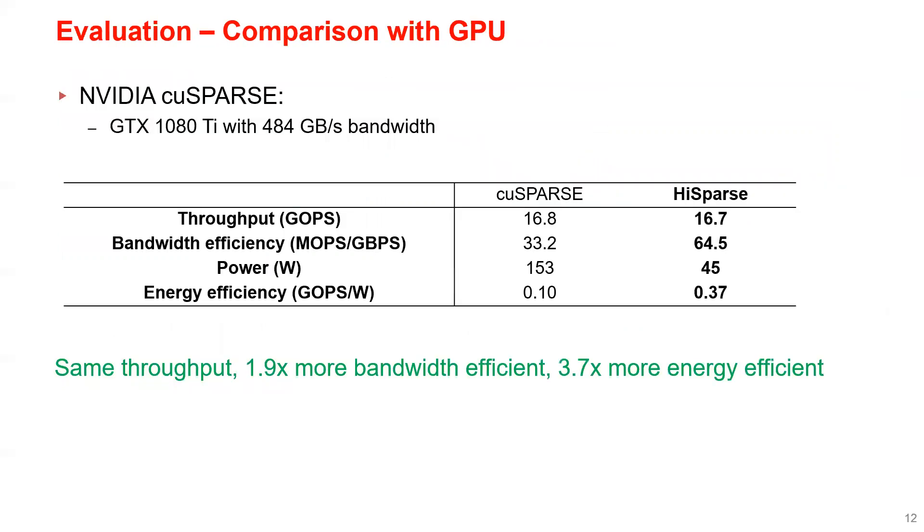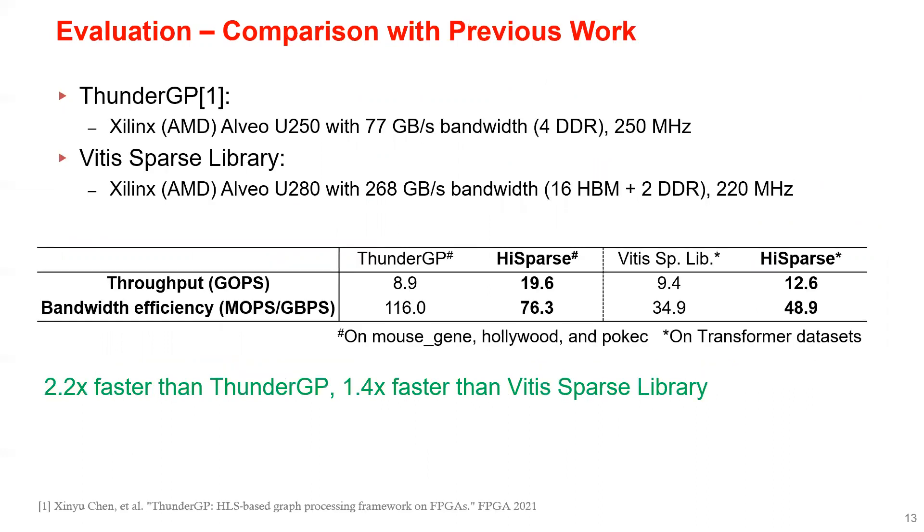As for the results, we compare HiSparse with our GPU baseline, which is the NVIDIA cuSparse Library. HiSparse has the same throughput as cuSparse, but is around 2x more bandwidth efficient and 3.7x more energy efficient.